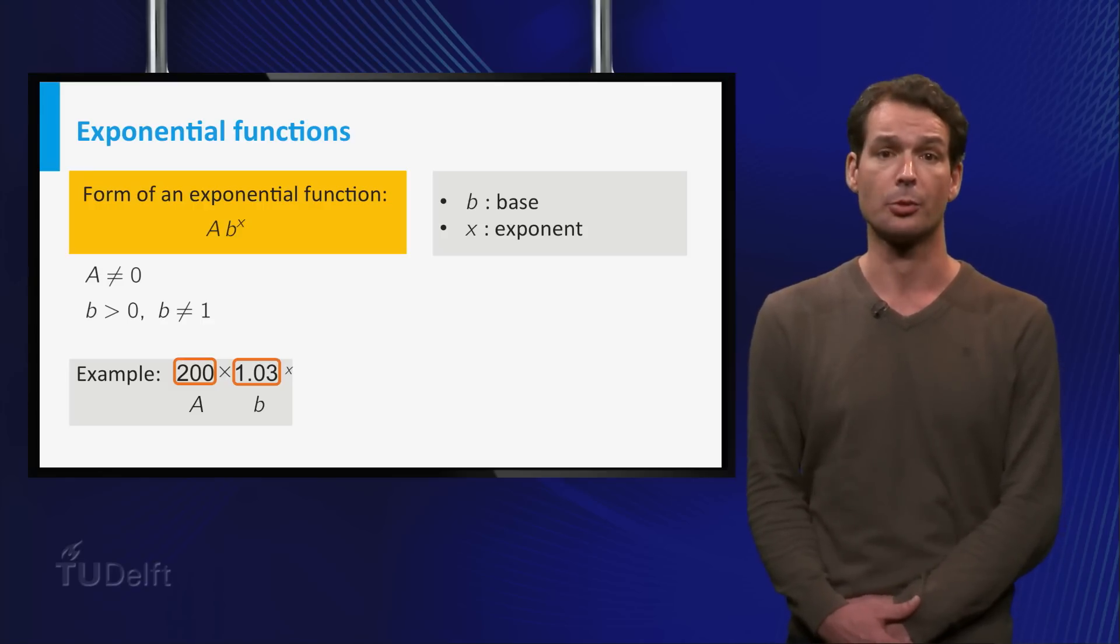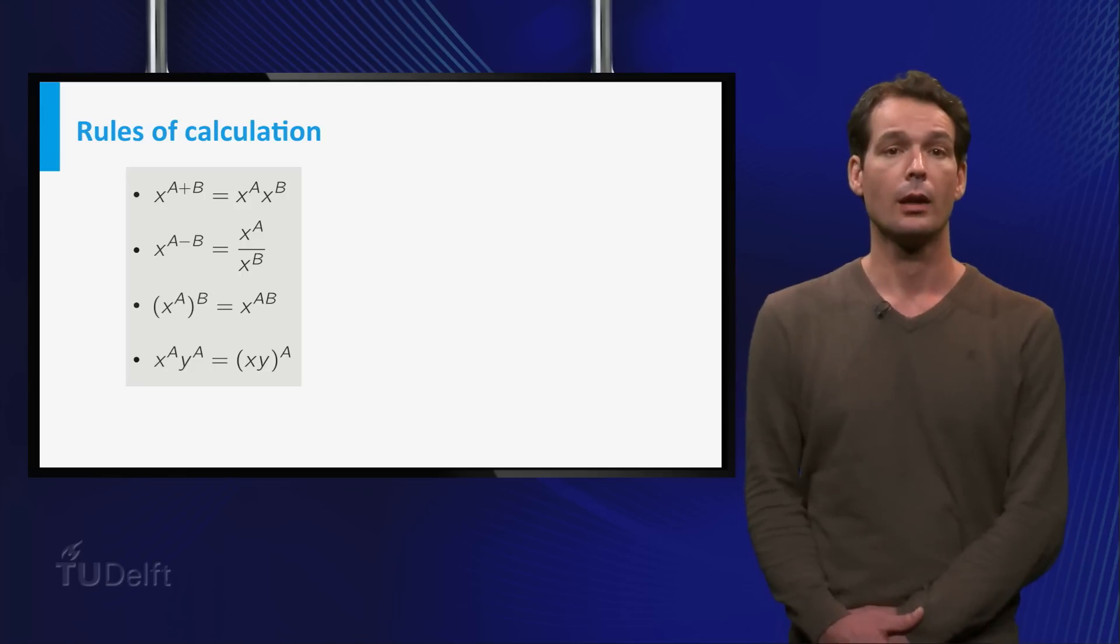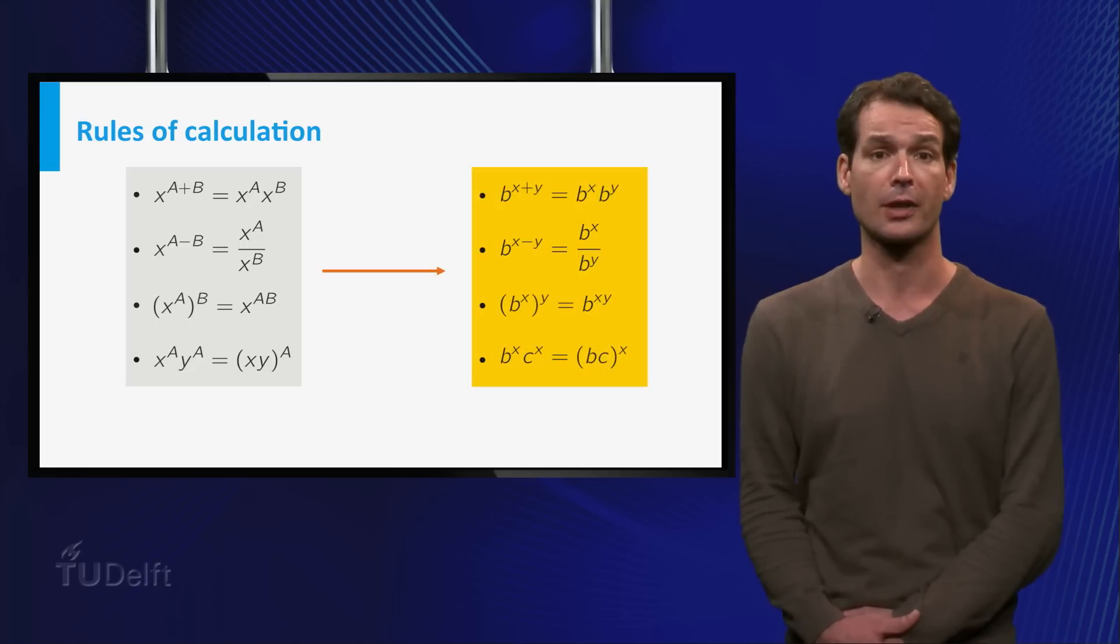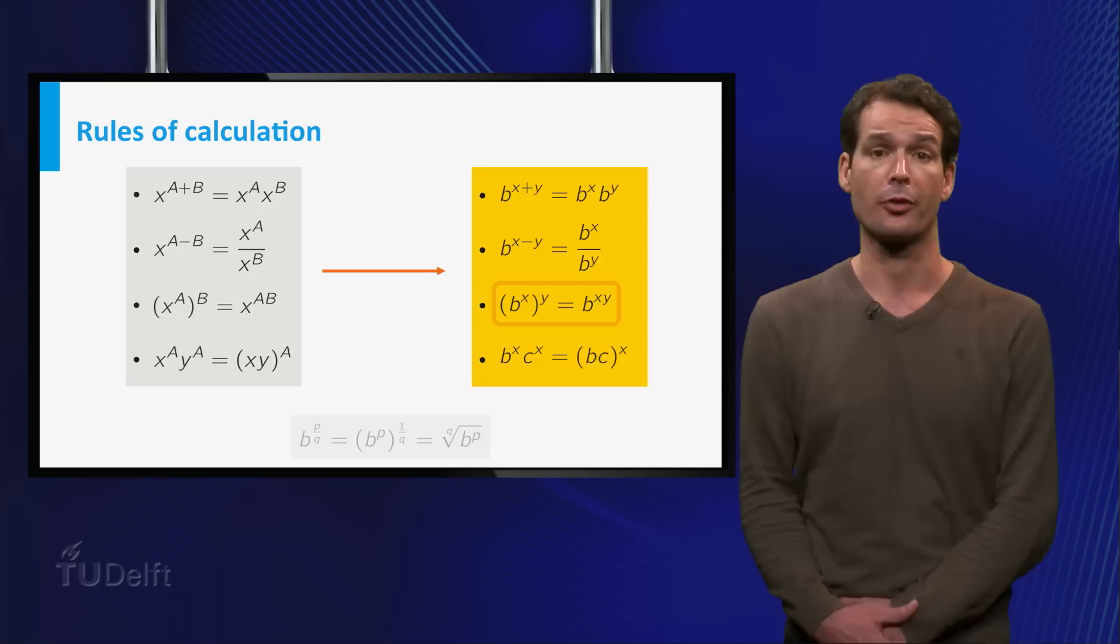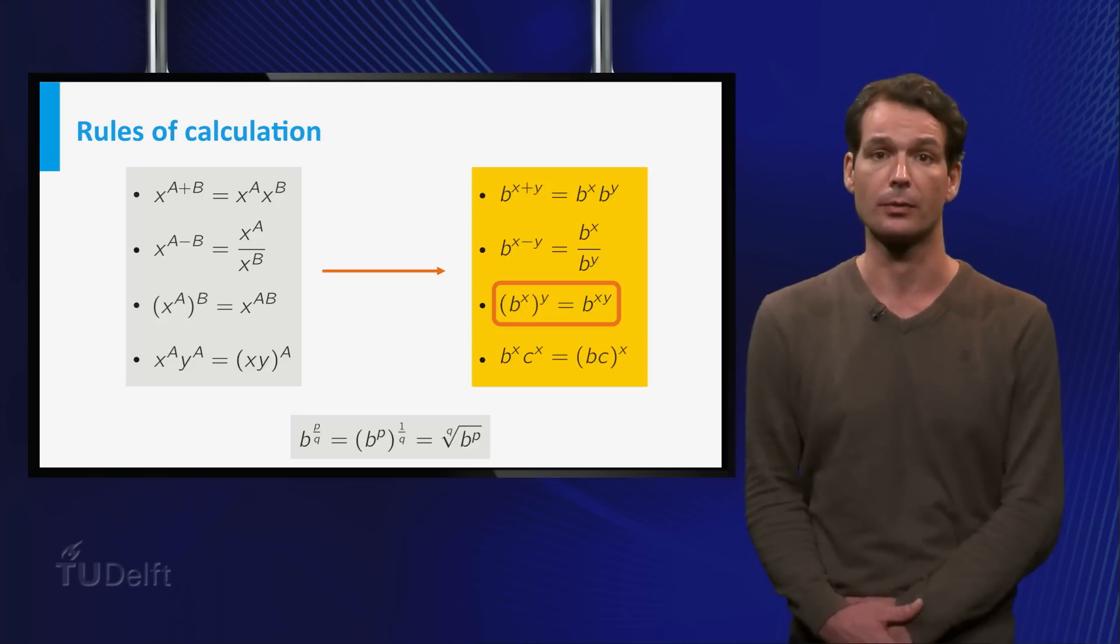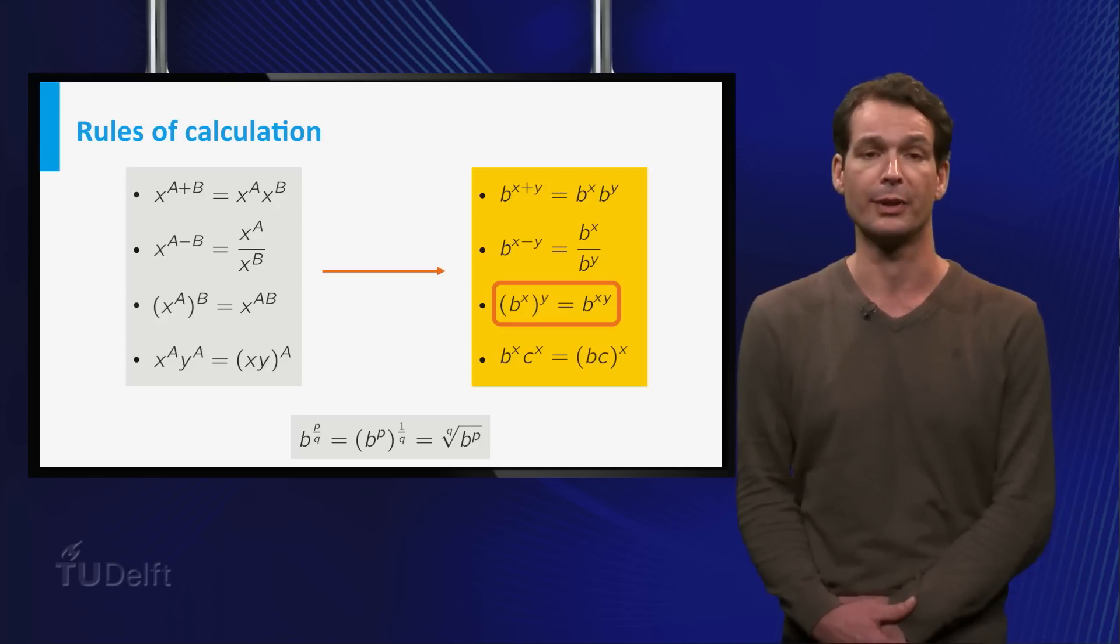To do this, we need some properties for exponential functions. We already know calculation rules for power functions. These rules immediately give us rules of calculation for exponential functions with rational exponents. In particular, using the third rule, we know what b to the power x should be if x equals p over q with q larger than 0. It is the qth root of b to the power p.